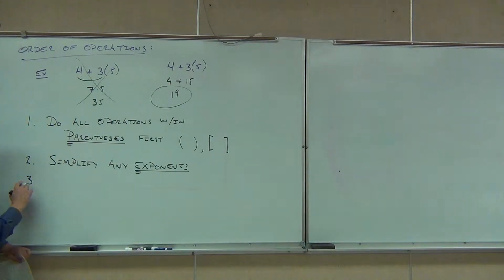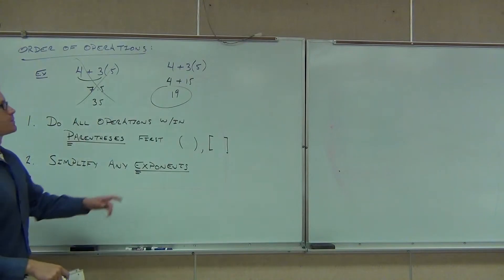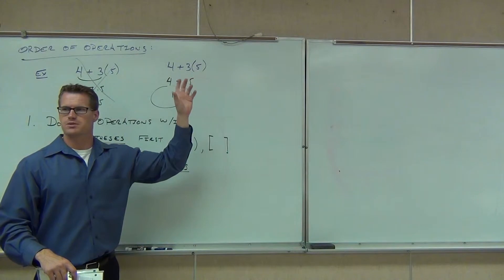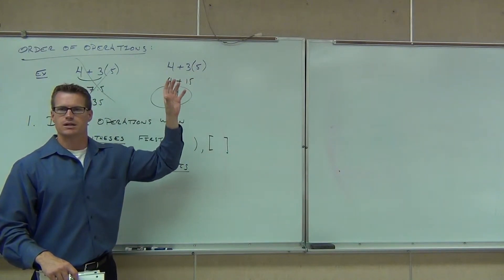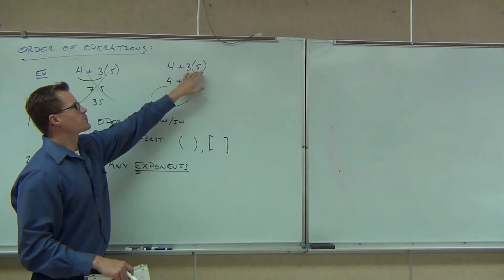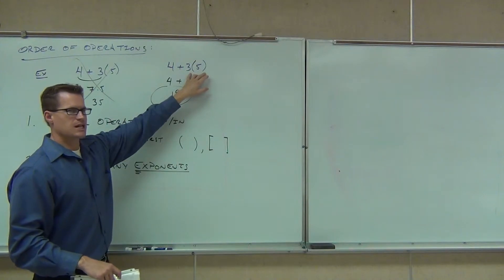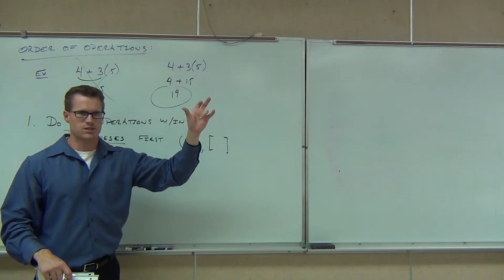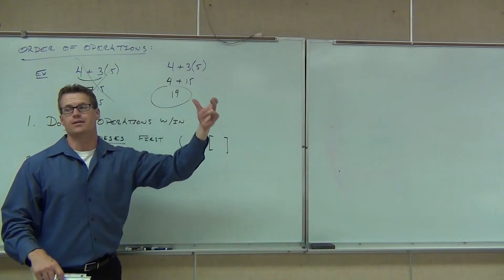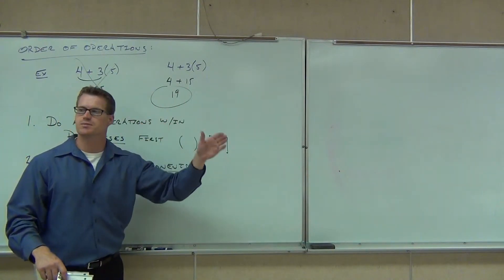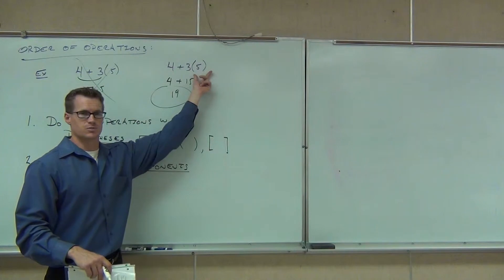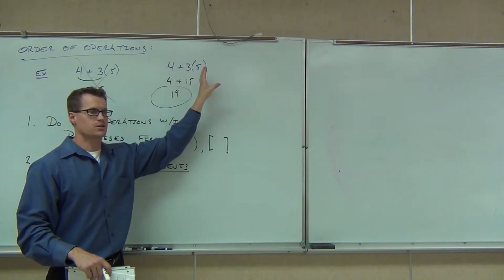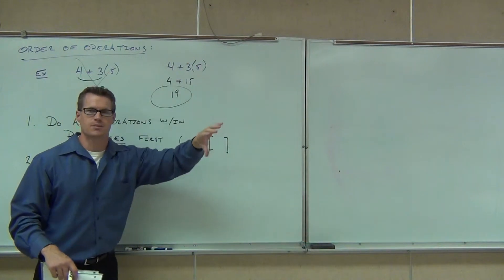Third step. We look for parentheses first. Now let me set something straight — please pay attention. Even though we have parentheses here, do you see how there's nothing to do inside the parentheses? It's just the five. That means they're done. The parentheses aspect is completed; it just means a multiplication part now. Then we look for exponents. We don't have any exponents, so we move on to the next step.